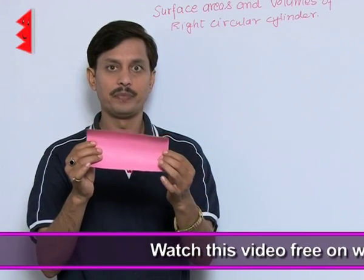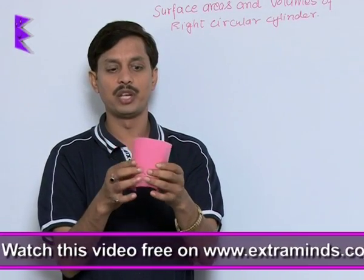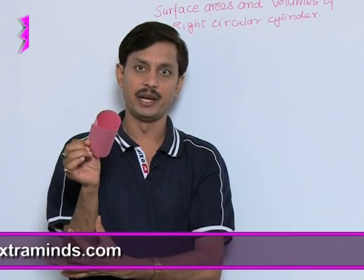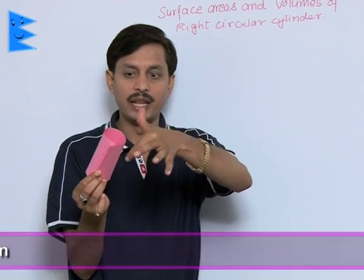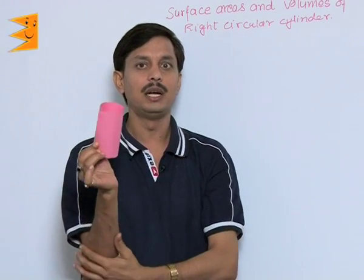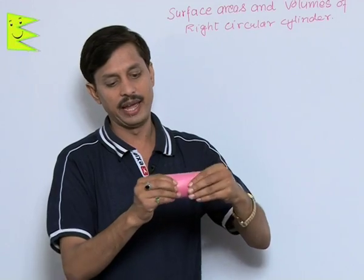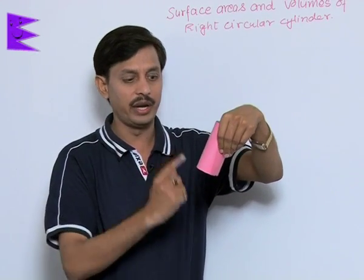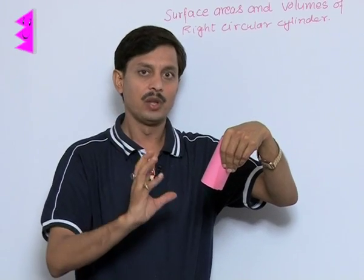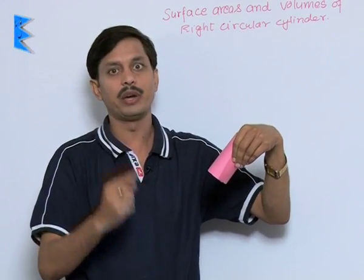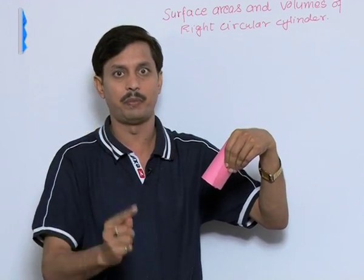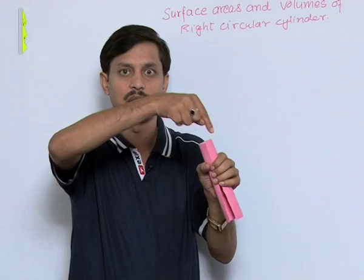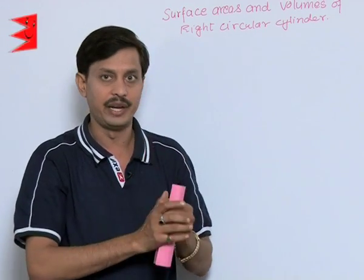But if you roll it along its length, then again the shape will be a cylinder. In this case, the length becomes the circumference and the breadth becomes the height of the cylinder. Remember: when you roll a rectangular sheet along its length, length is the circumference and breadth is the height; when rolled along its breadth, breadth is the circumference and length is the height.